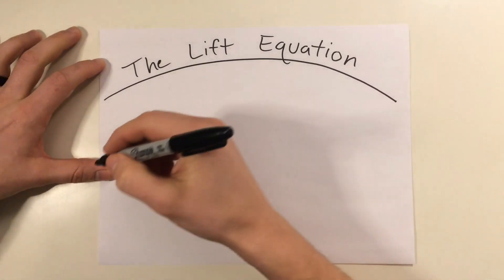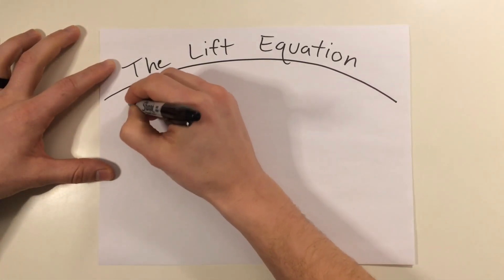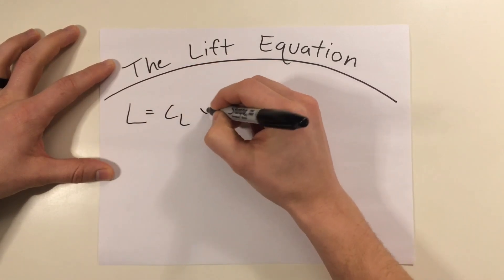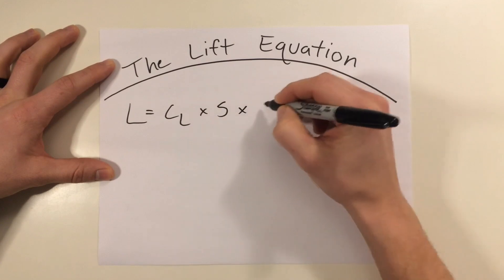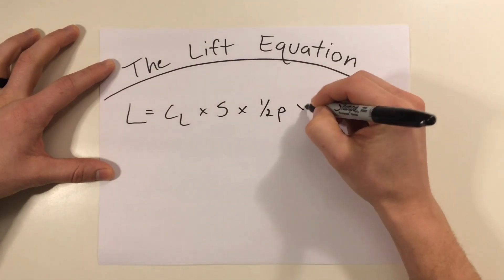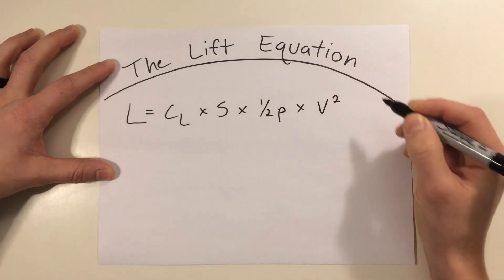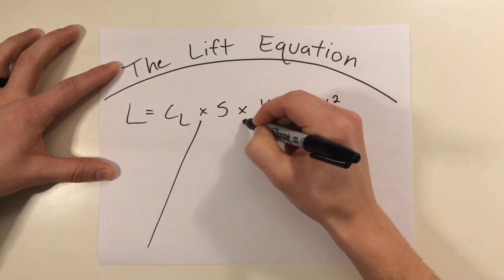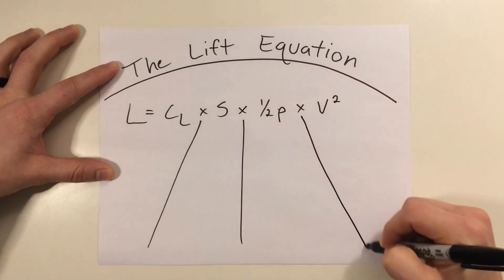Now, lift is going to be made up of four key elements, and we're going to be using this formula. So, lift equals the coefficient of lift times surface area times one-half rho, also known as air density, times the velocity squared. Now, let's break it down. We'll break it down into segments right here, just to make it easy to understand.